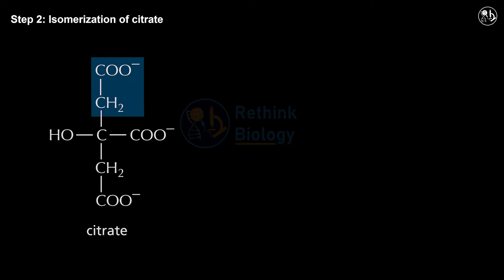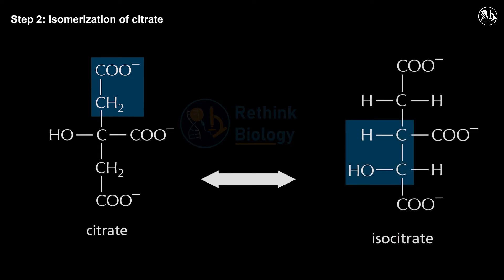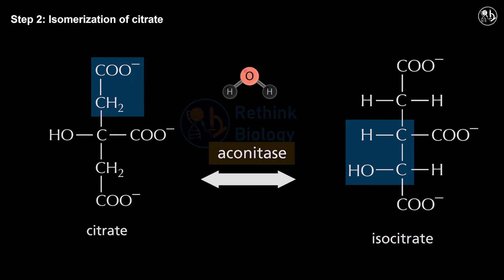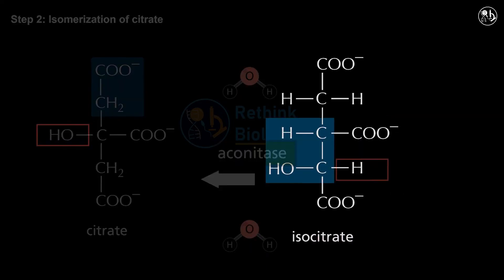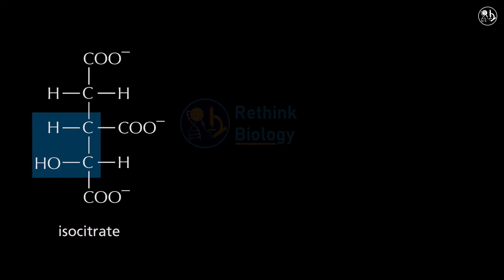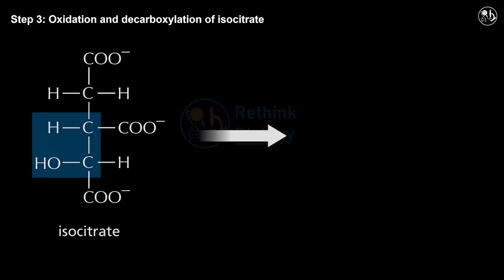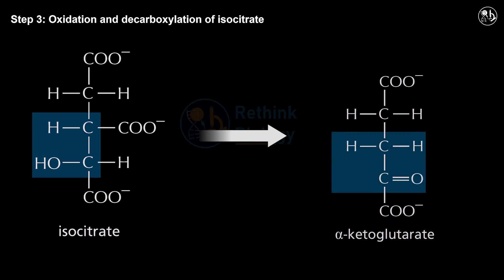Step 2: Isomerization of citrate. In this step, citrate is converted into its isomer, isocitrate. This reaction is catalyzed by the enzyme aconitase and involves the removal and addition of water molecules. The hydroxyl group moves from one carbon to another.